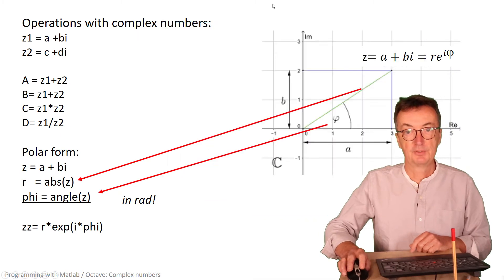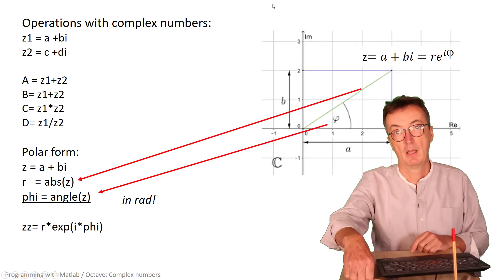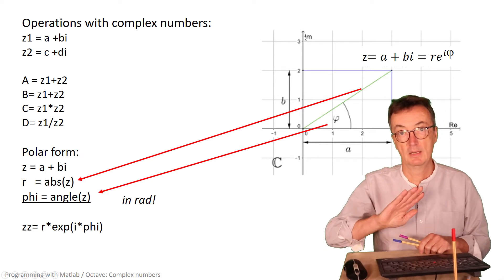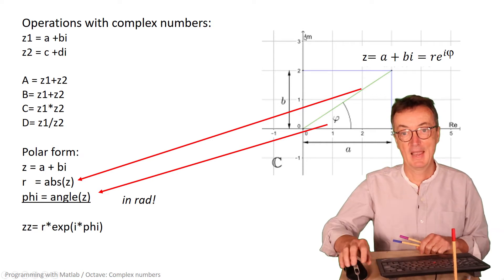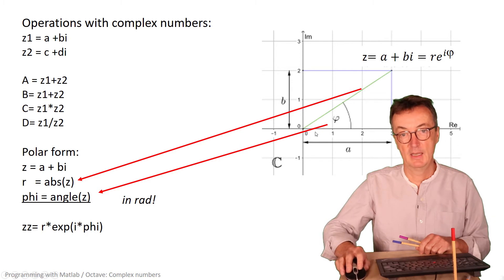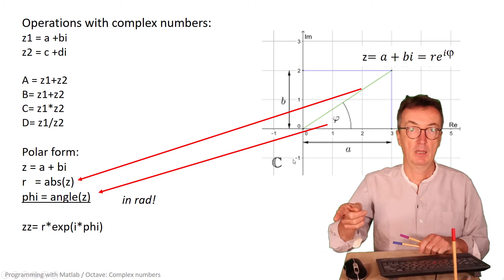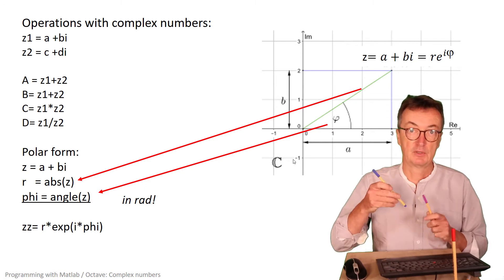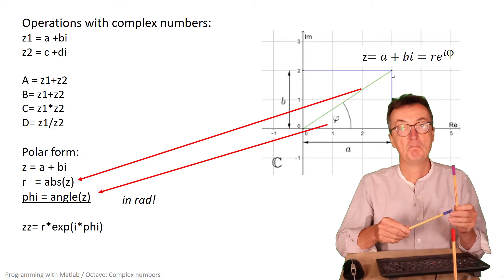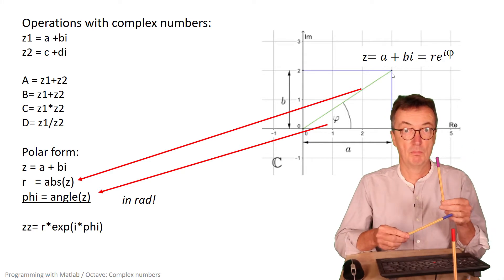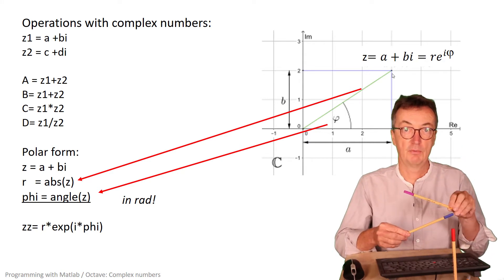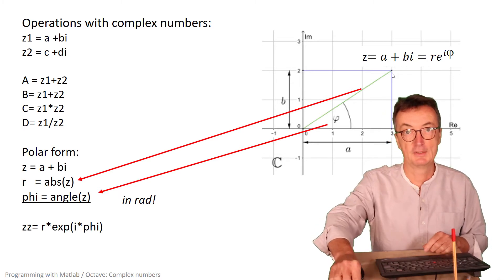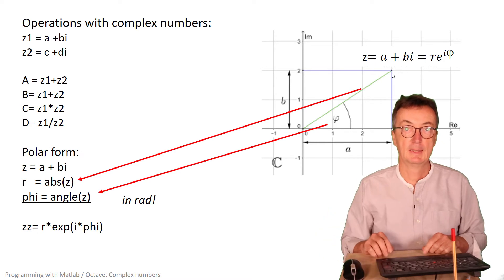From mathematics we know that a good way to represent complex numbers is on a plane, where the real and imaginary parts are on the x and y axes. It's like a vector — adding two complex numbers uses vector notation. Have a look at the mathematics if you're not quite familiar with that anymore.